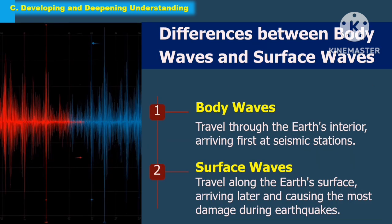The differences between body waves and surface waves: Body waves travel through the Earth's interior, arriving first at seismic stations. Surface waves travel along the Earth's surface, arriving later and causing the most damage during an earthquake.